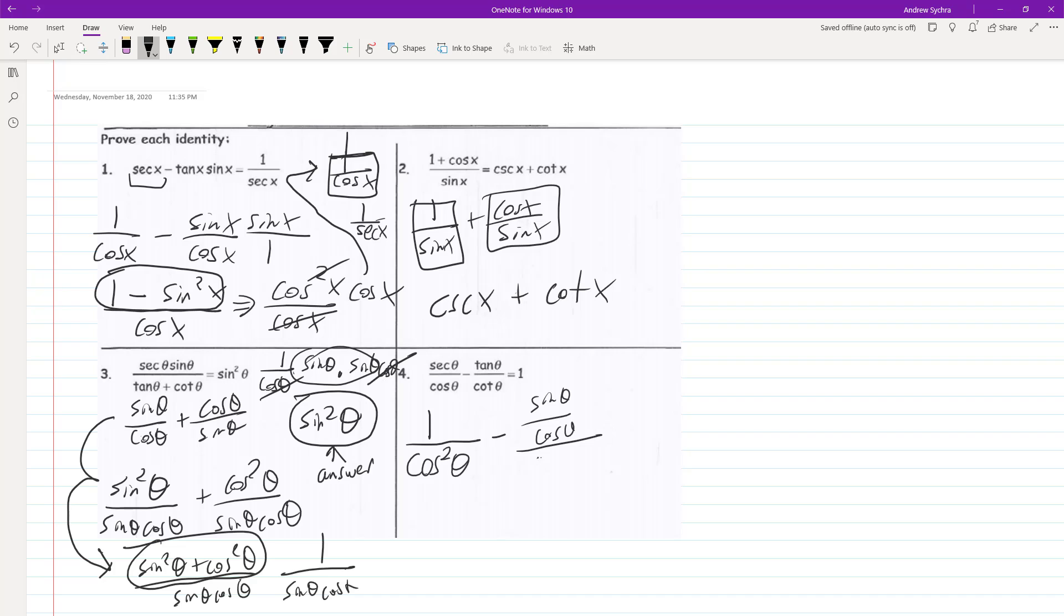And what we can do is reciprocate this. So this is the same thing as multiplying this by sine of theta over cosine theta. So we get 1 over cosine squared theta minus sine squared theta over cosine squared theta. And this can be converted to cosine squared theta over the common denominator, which is cosine squared theta, and we end up with 1.